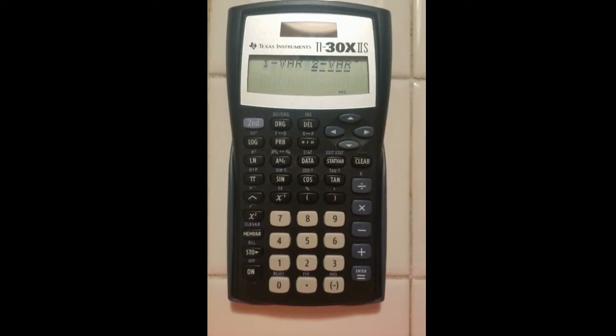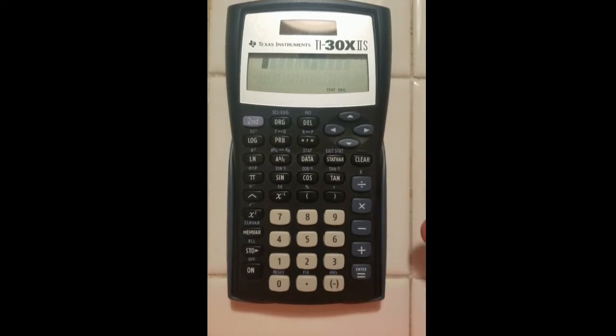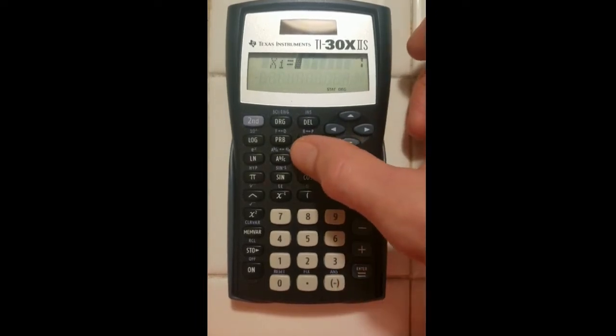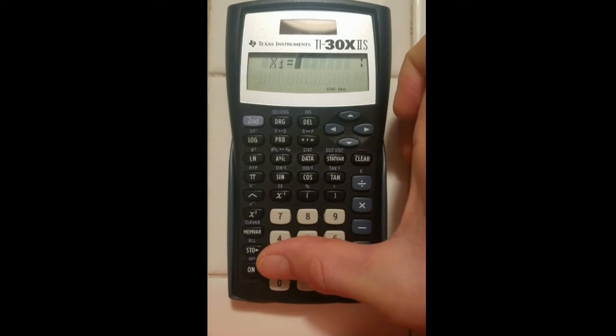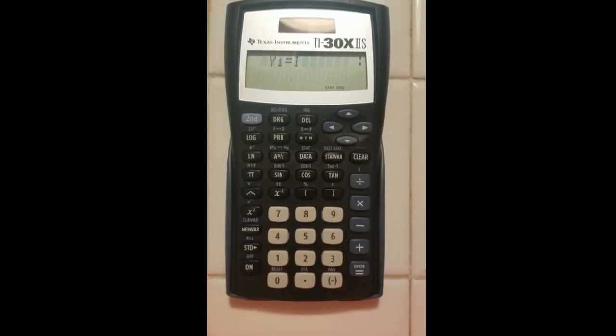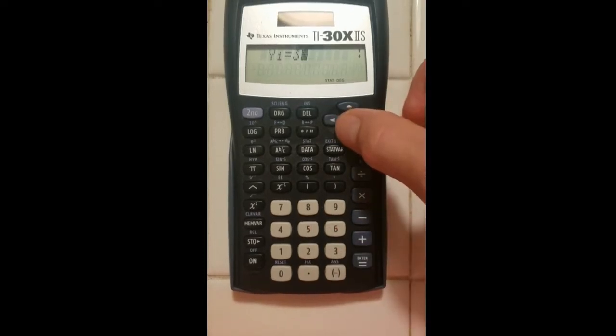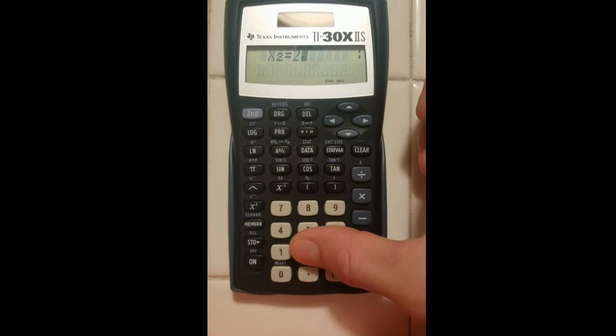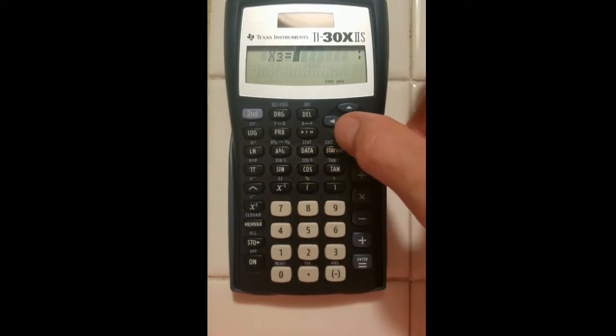Two variable statistics is abbreviated to var. Press enter. Now I have to press the data button again and now I can enter my values for X's and Y's. So I will hit my X value and simply type it in, then press the down arrow and type in the corresponding Y value for that X coordinate. Press down again to get to my next point and simply keep pressing down after I've typed in my values.